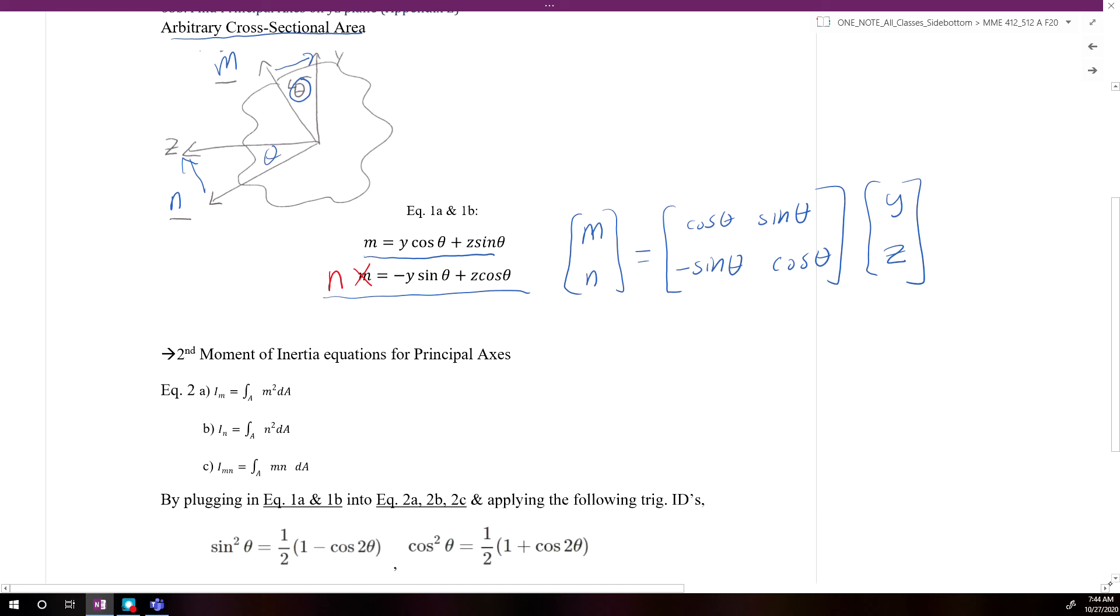Using our new coordinate system, we can define our moment of inertia along the M and then our mixed moment of inertia, I M N, using the following definitions.